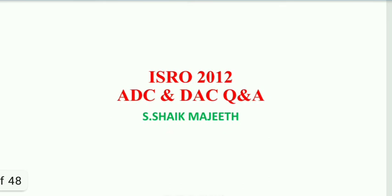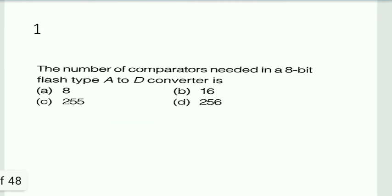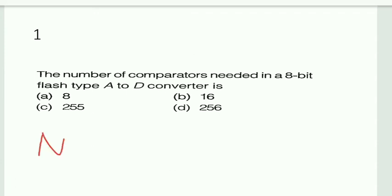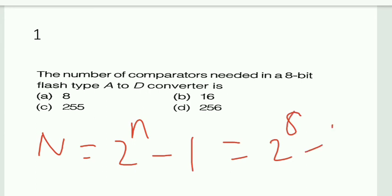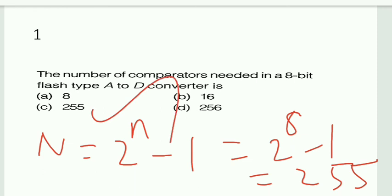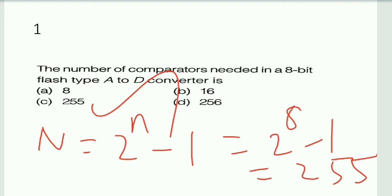Now for ISRO 2012: the number of comparators needed in an 8-bit flash ADC. The number of comparators required for an n-bit flash ADC is given by N = 2^n − 1. Here, 2^8 − 1 = 255. So option C is the right answer. That is all about this session, thank you.